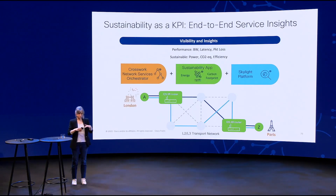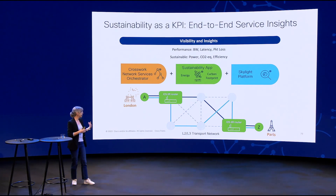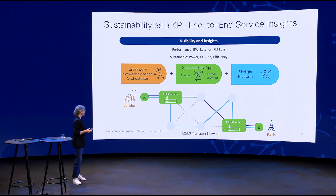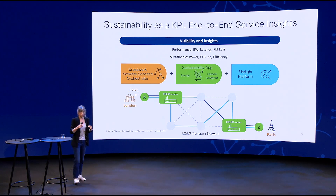The way we built this with customers, there are three components to the solution. One is the Skylight platform, of course. Then we are using NSO to do all the provisioning and automation. And then there is a new component, which is the sustainability app. The sustainability app provides sustainability KPIs like power, carbon footprint, and efficiency.